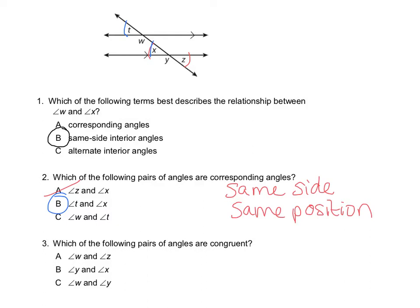Number three: which of the following pairs of angles are congruent? We look at angle W and angle Z — one's on the outside (exterior) and one's on the inside (interior). There's no answer choice for inside-outside alternate, so we know it cannot be A or B.